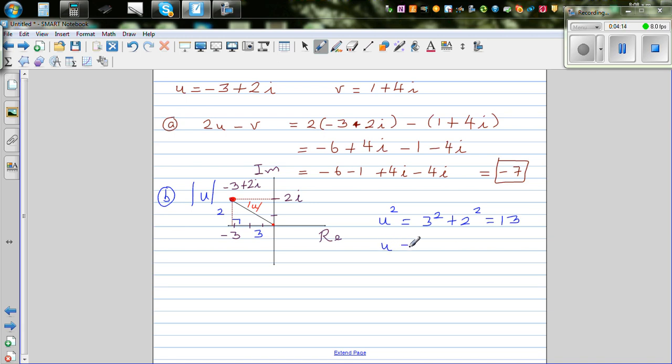So modulus of u equals the positive value, which is square root of 13. This means the distance of this complex number from the origin O is root 13.